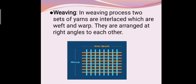Weaving is the process in which two sets of yarns are interlaced which are weft and warp. They are arranged at right angles to each other. You can see here the two types of threads. One is orange color thread and other is blue color thread. The blue color thread is running vertically and it is called warp and the orange color threads are running crosswise and they are called fill or weft.